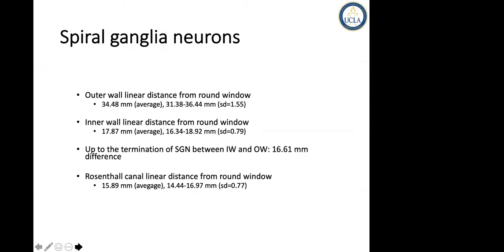To summarize: the outer wall linear distance from the round window is almost 35 millimeters to cover the entire neurons, while the inner wall is about 18 millimeters. So there is a difference of approximately 16 millimeters, and the top 25% of the cochlear duct is not sitting right next to the neurons.